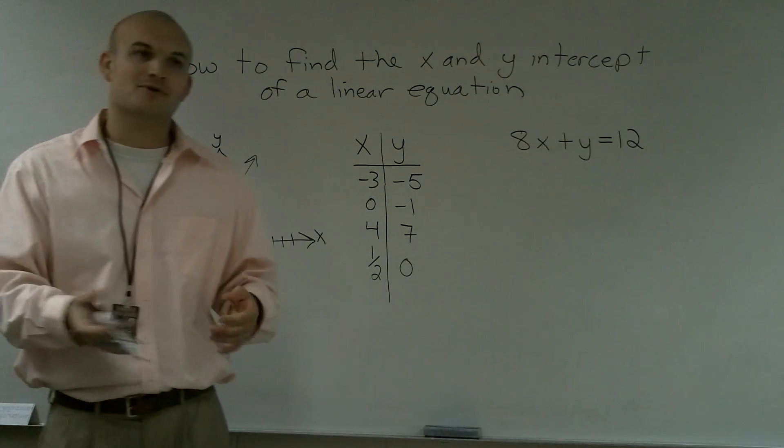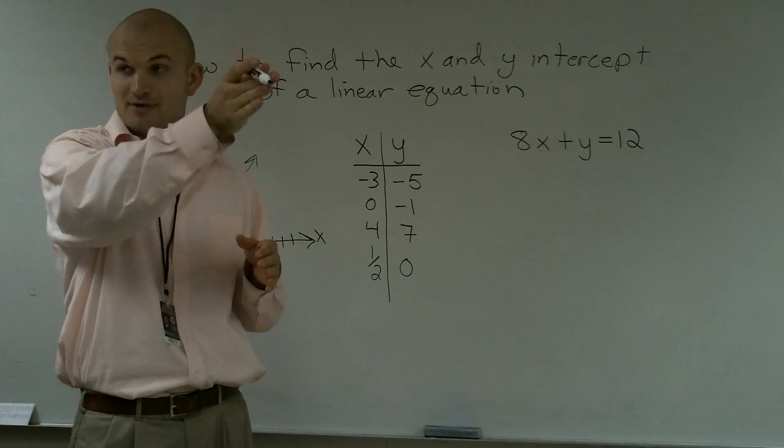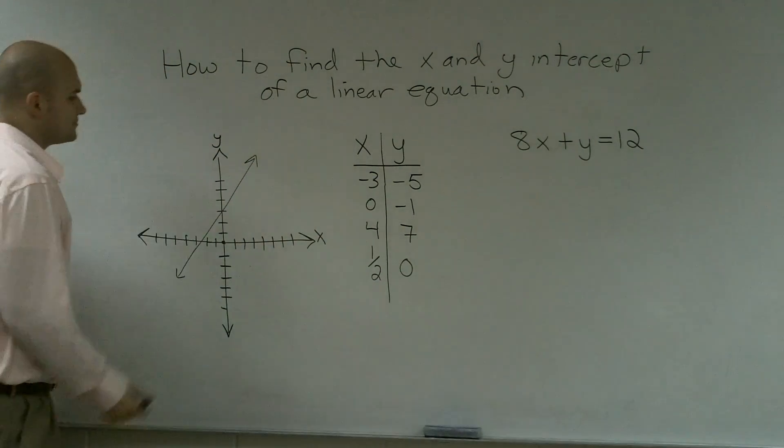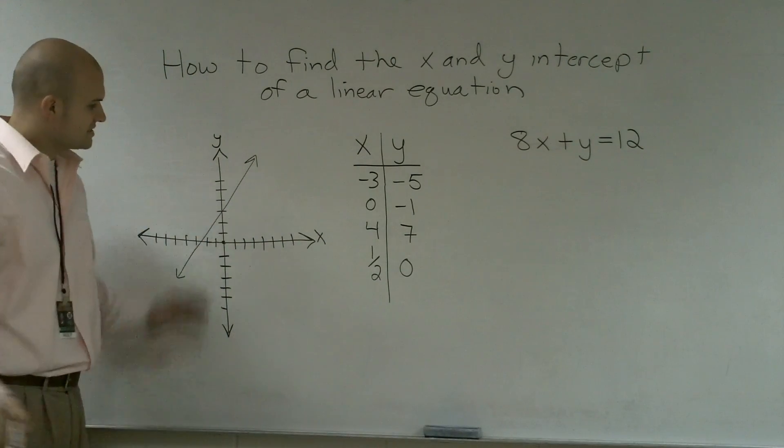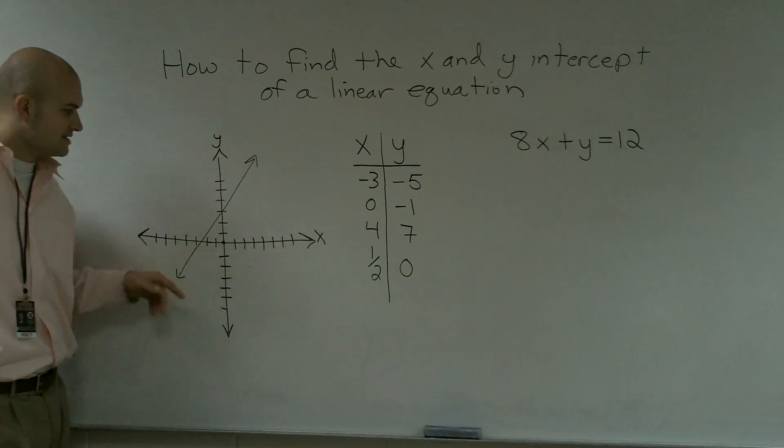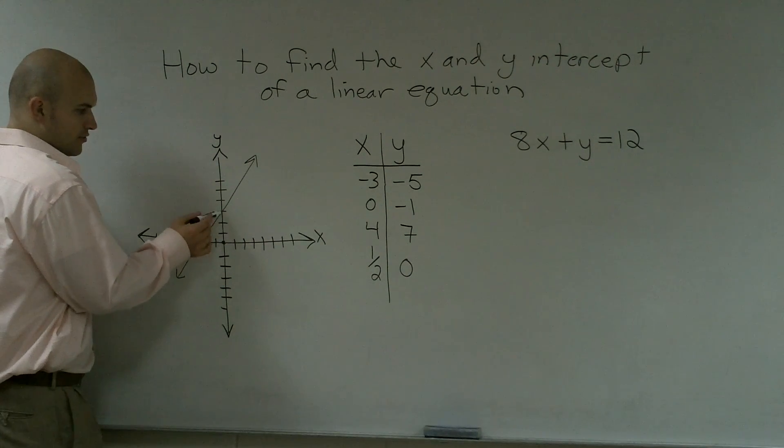Just like a defensive back will intercept a pass, the pass is supposed to be going somewhere, the guy intercepts the pass to go ahead and catch it. So where does this line cross this y intercept? And what you guys can say is, well, it crosses at 3.